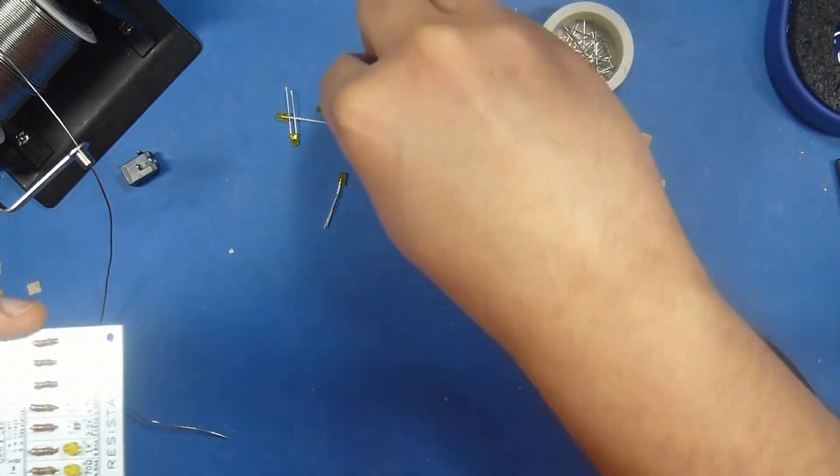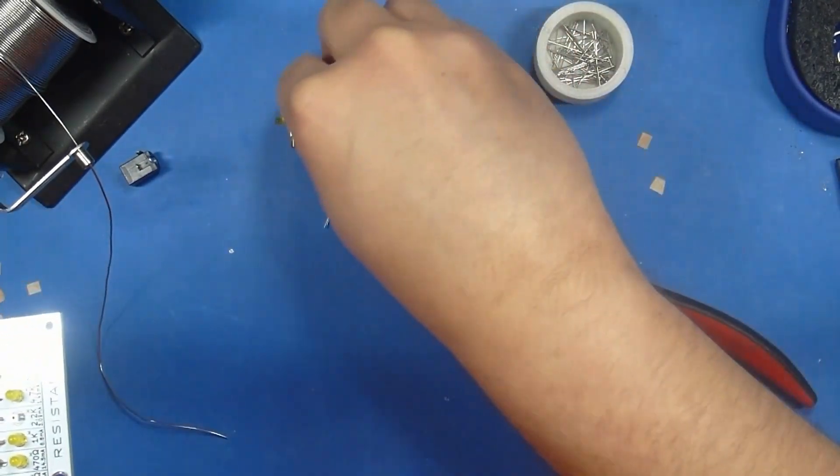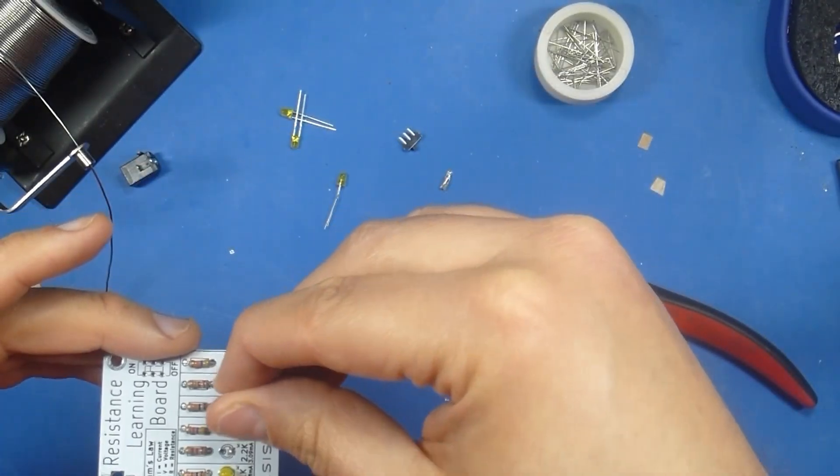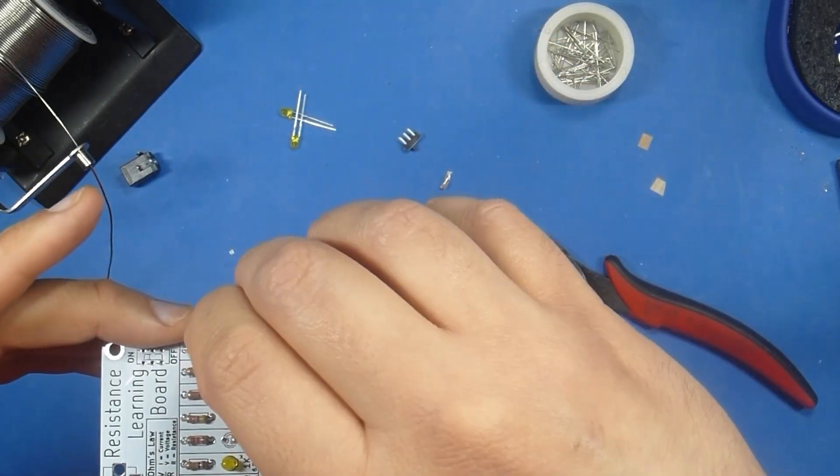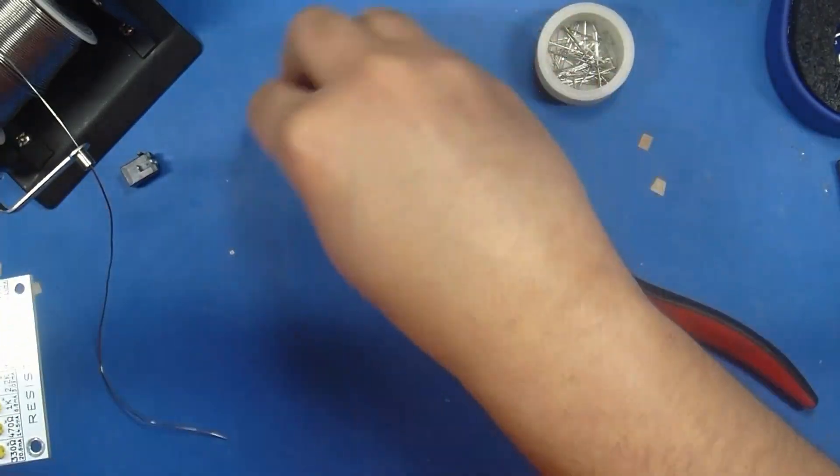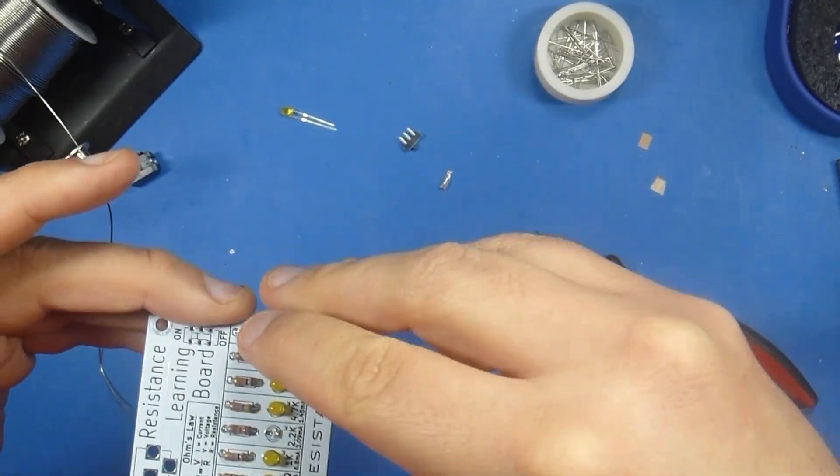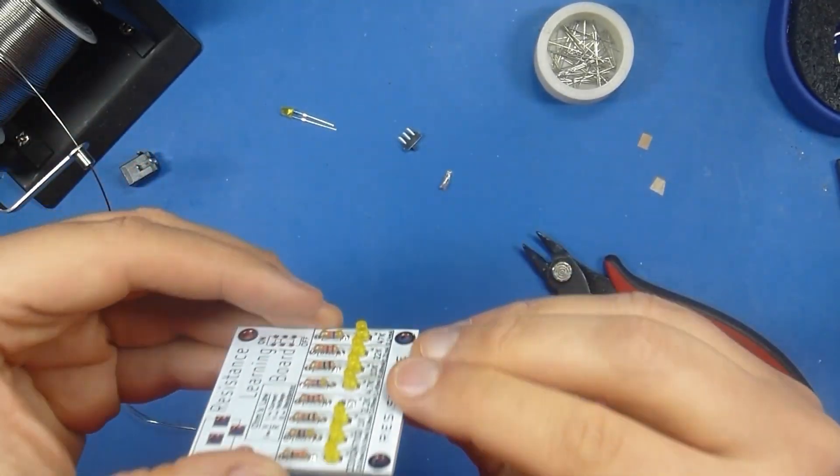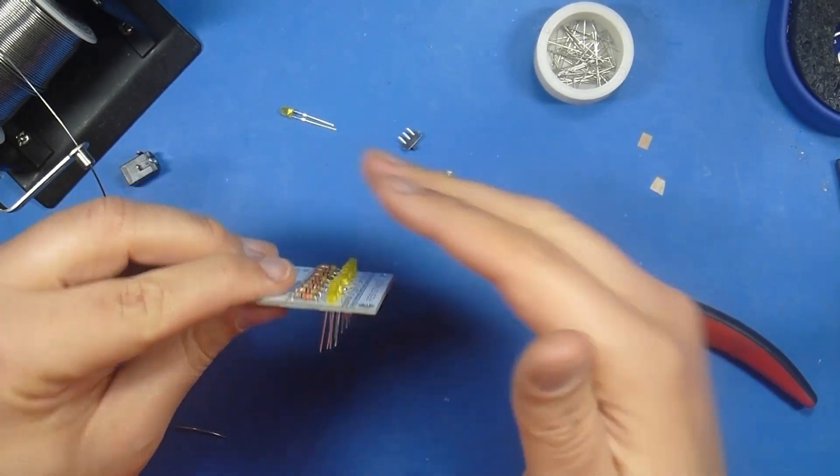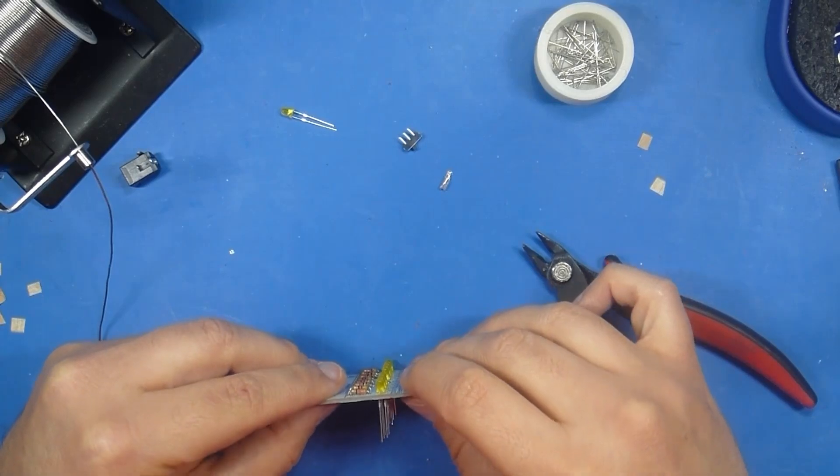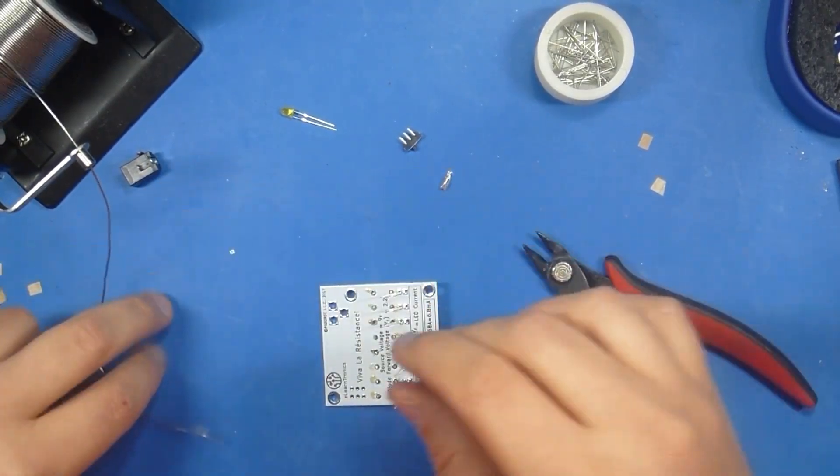Again, if you put these through backwards, the circuit will not work and the LED will not light up. Now, it looks like that through hole still has a little bit of solder in there. So, I'll show you how to deal with that. But first, I'm going to take care of the other seven LEDs. Now that they're through, I'm just going to look and make sure that they're all facing the correct direction. And they are. And then I will flip over the circuit board, flat on the surface.